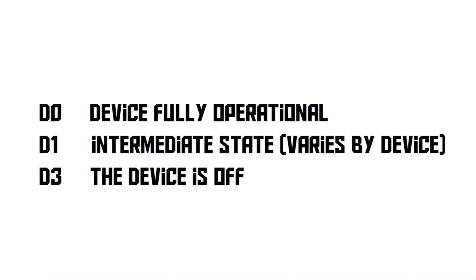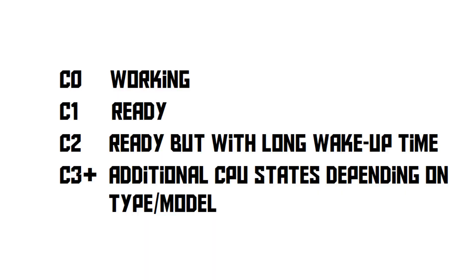ACPI also supports a number of D states, which are for specific devices in the computer. D0 means the device is on, and then D1 is some standby mode, and so on. C states are exactly the same as D states, but they're specifically for CPUs only.